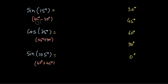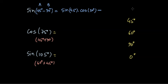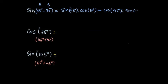Let's find sine of 15 degrees by writing 15 degrees as 45 minus 30. The formula says that when you have sine of some angle minus another angle — let's label them a and b — the formula is: sine of the first angle times cos of the other angle, then minus cos of the first angle times sine of the other angle. So here: sine of 45 degrees times cos of 30 degrees, minus cos of 45 degrees times sine of 30 degrees.